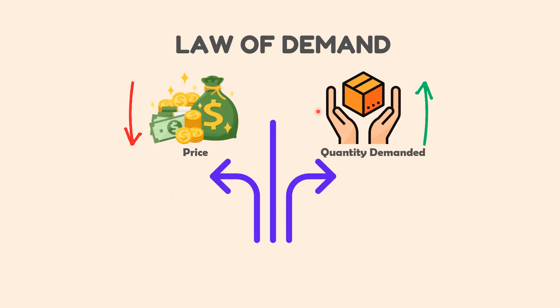The Law of Demand expresses the functional relationship between the price of a commodity and its quantity demanded. It states that the demand for a commodity tends to vary inversely with its price. In other words, other things remaining constant, a fall in price of a commodity will lead to a rise in demand for that commodity, and a rise in price will lead to a fall in demand.